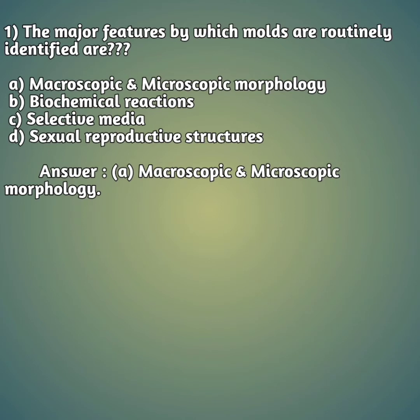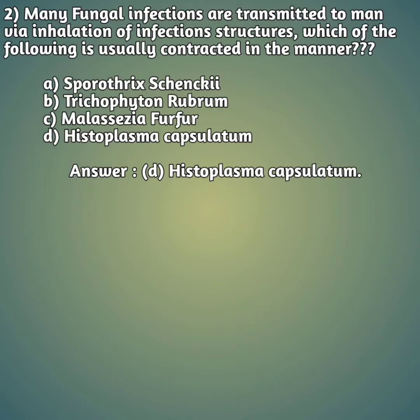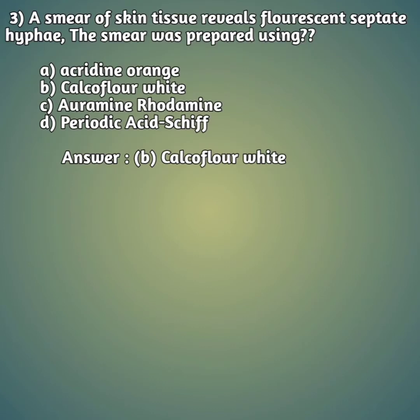Second question: many fungal infections are transmitted to man via inhalation of infectious structures. Which of the following is usually contracted in this manner? Option A: Sporothrix schenckii; option B: Trichophyton rubrum; option C: Malassezia furfur; option D: Histoplasma capsulatum. The answer is D, Histoplasma capsulatum.